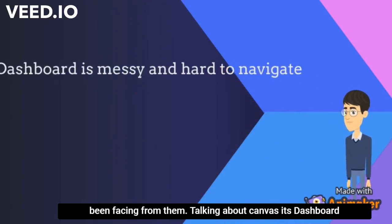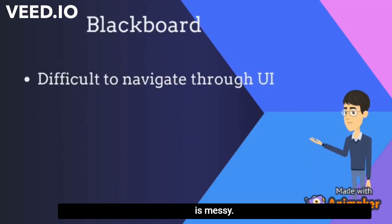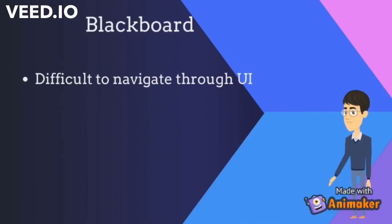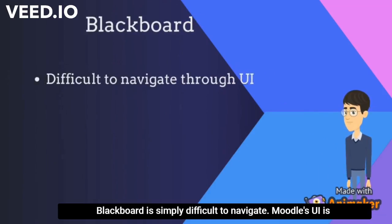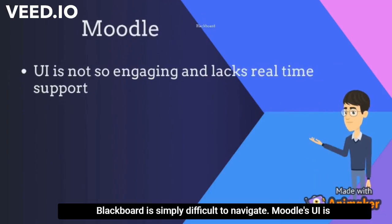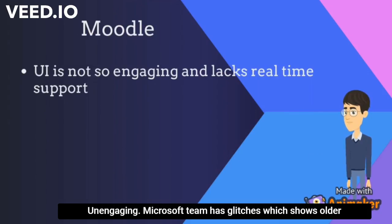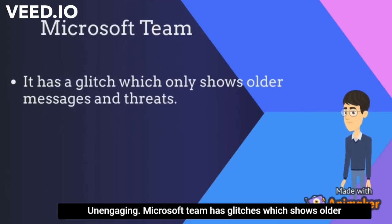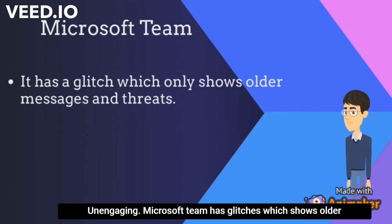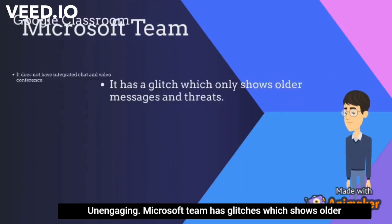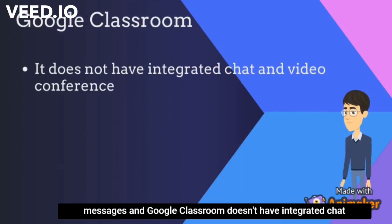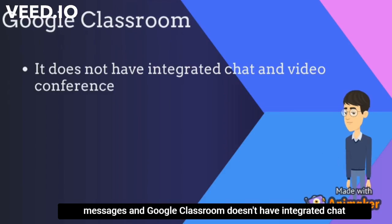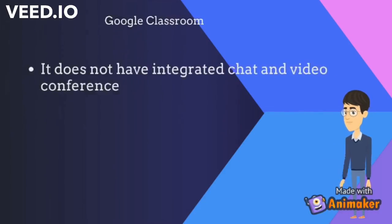Talking about Canvas, its dashboard is messy. Blackboard is simply difficult to navigate. Moodle's UI is unengaging. Microsoft Teams has glitches which show older messages, and Google Classroom doesn't have an integrated chat and video conference system.